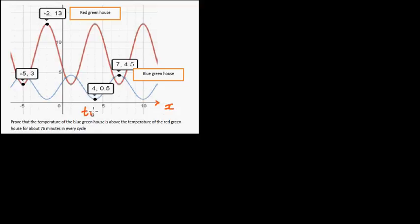In my previous video, we went through the process of writing the equation of this red graph and the blue graph. In the last video, I told you: on the x-axis, this is the time since midnight, and on the y-axis, we have taken the temperature of two greenhouses — one called the red greenhouse and the other the blue greenhouse.